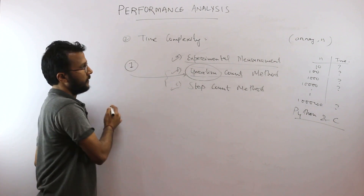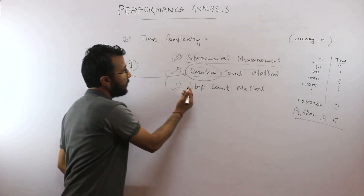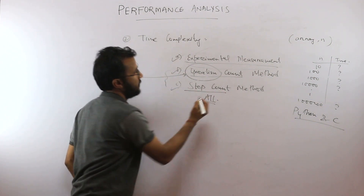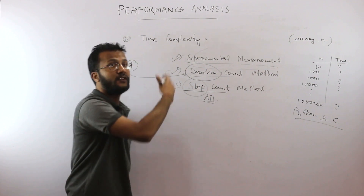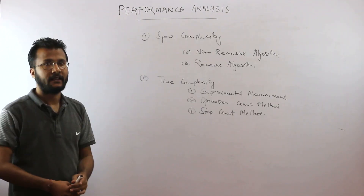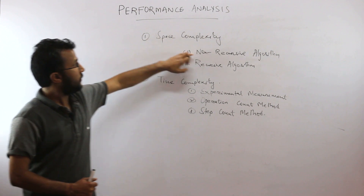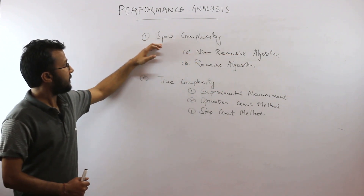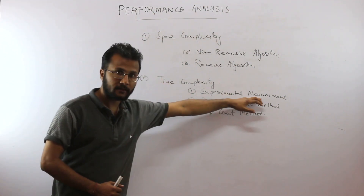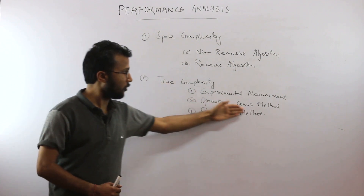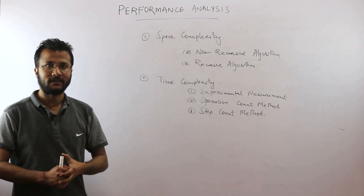The third method is the step count method. Unlike the operation count method which focuses on one critical operation, in the step count method you consider all operations and all steps in your algorithm, find the contribution of each step, and then approximate the time complexity. In upcoming videos I will discuss how to find space complexity for non-recursive and recursive algorithms, and time complexity using all three methods.